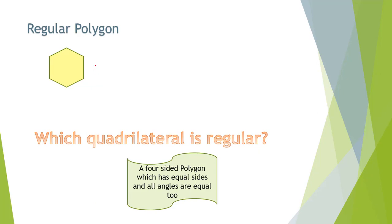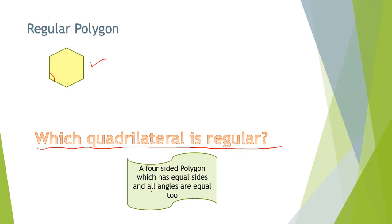Regular polygons: a polygon is regular when every side has the same length and every angle has the same measure. This hexagon is an example of a regular polygon. Now, which quadrilateral is regular? A four-sided polygon which has equal sides and all angles are equal.